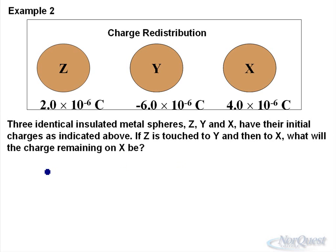Let's run through the scenario. We have Z, which is 2.0 times 10 to the negative 6. It is touched to Y, which is minus 6.0 times 10 to the negative 6 Coulombs. If we were to figure out the net charge at that point, we have 2.0 times 10^-6 minus 6.0 times 10^-6, which should give us a net charge here of negative 4.0 times 10 to the negative 6.